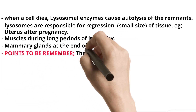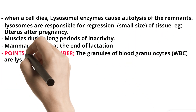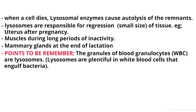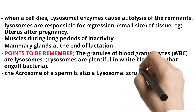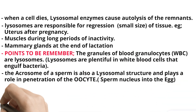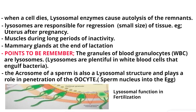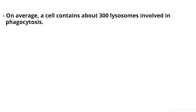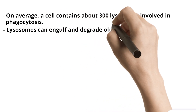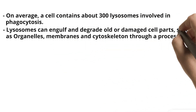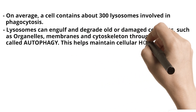Points to be remembered: The granules of blood granulocytes (WBC) are lysosomes. Lysosomes are plentiful in white blood cells that engulf bacteria. The acrosome of a sperm is also a lysosomal structure and plays a role in penetration of the oocyte (sperm nucleus) into the egg. On average, a cell contains about 300 lysosomes involved in phagocytosis. Lysosomes can engulf and degrade old or damaged cell parts — such as organelles, membranes, and cytoskeleton — through a process called autophagy. This helps maintain cellular homeostasis.